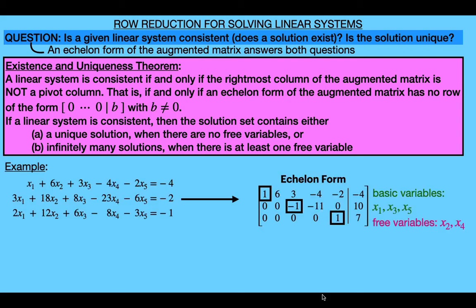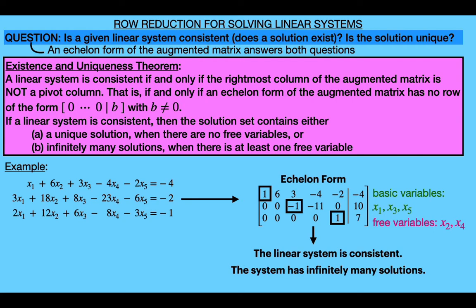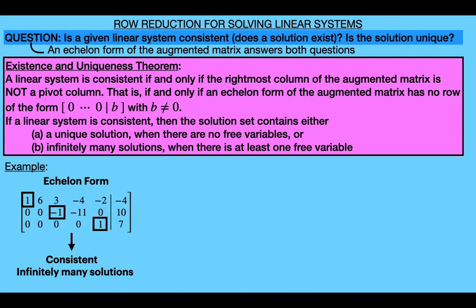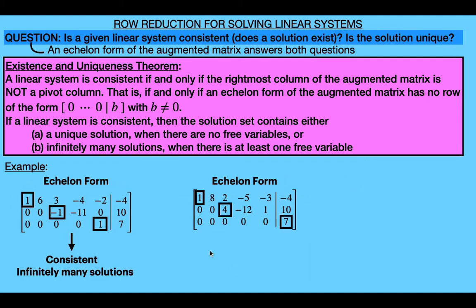So if we go back to our example from earlier, where we found this echelon form of the augmented matrix, then since this matrix has no row whose leading entry is in the last column, we know that this system is consistent, so it has at least one solution. Now using the uniqueness part of the theorem, since the linear system is consistent and since this echelon matrix does have free variables, we get that this linear system has infinitely many solutions. Now if we instead considered a linear system represented by this echelon matrix, then since this last entry is in the rightmost column making it a pivot column, the existence part of the theorem tells us that the corresponding linear system is inconsistent.